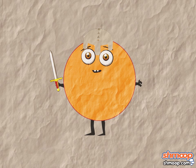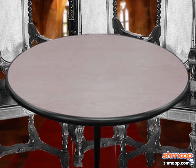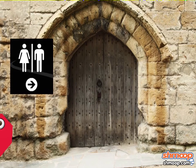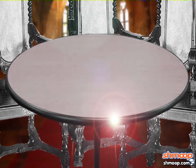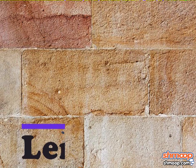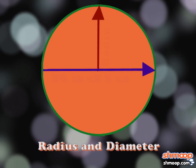First, a circle has no corners, so if we have to run suddenly off to battle, or to the loo, we won't hurt ourselves on the corners. While rectangles have two measurements, length and width, circles have a radius and a diameter.